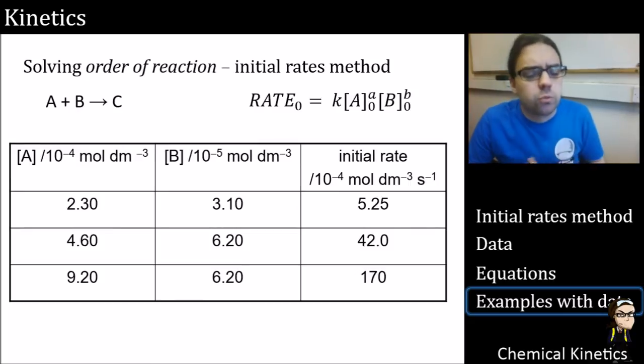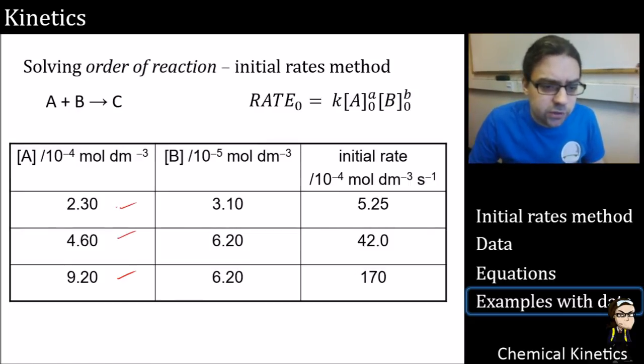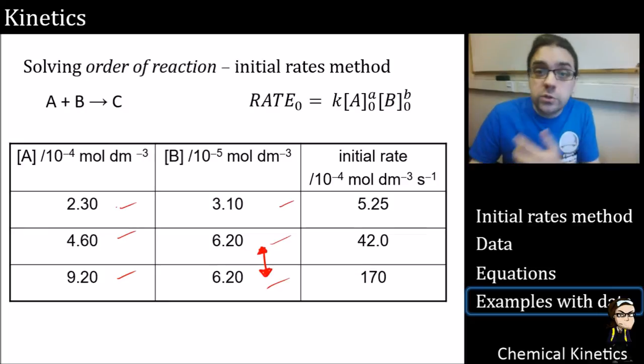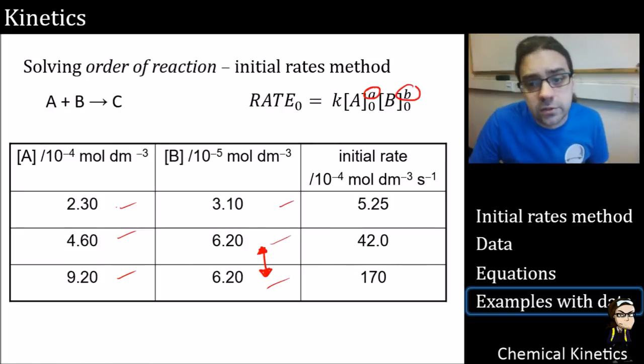Here's some more data, and we'll cover this in the lecture exactly what's happening. We've changed the concentration of A, we've changed the concentration of B, and we've got two concentrations of B that are the same. So we can use that initial rates method to try and work out the exponent A, and then we can plug the rest of the data in to get B. We'll cover this a bit later.